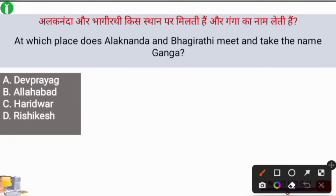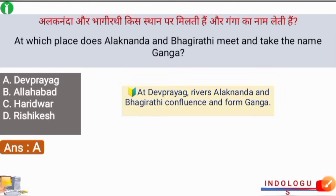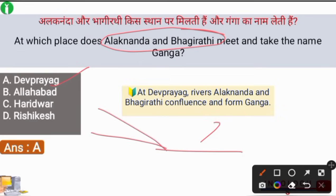Next question: At which place do the Alaknanda and Bhagirathi meet and take the name Ganga? The right answer is option A, that is Devprayag. Devprayag is the place where the Alaknanda and Bhagirathi River streams meet, after which it takes the name Ganga.